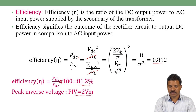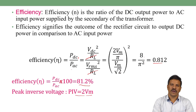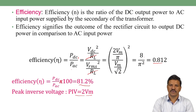The peak inverse voltage (PIV) is the maximum reverse voltage across the reverse-biased diode. In the half-wave rectifier, PIV = Vm. In the full wave rectifier, during the positive half cycle we get Vm, and during the negative half cycle also Vm — so the total peak inverse voltage for the full wave rectifier is 2Vm.